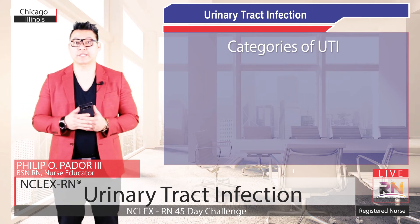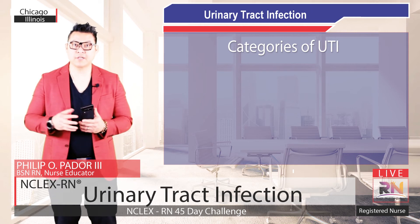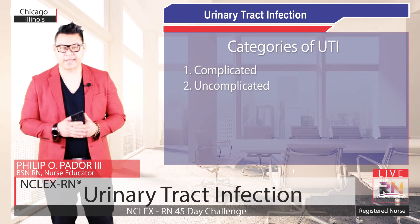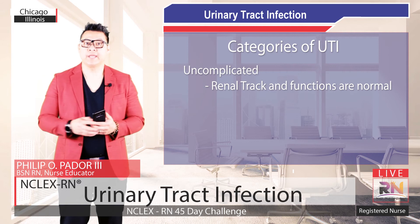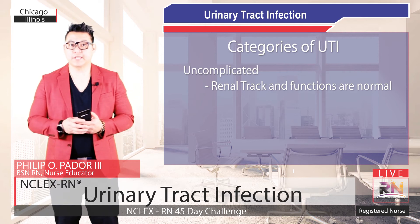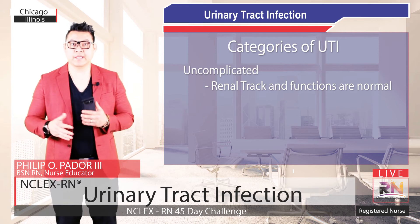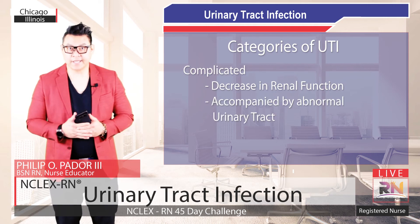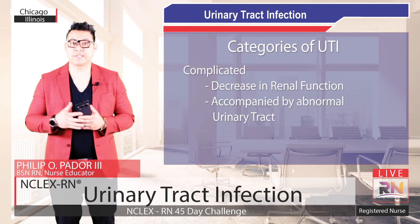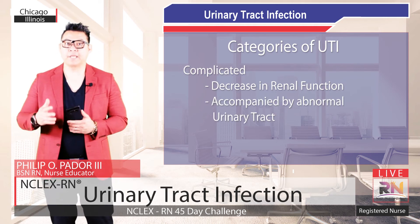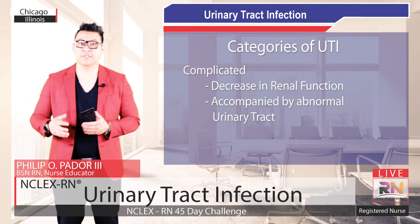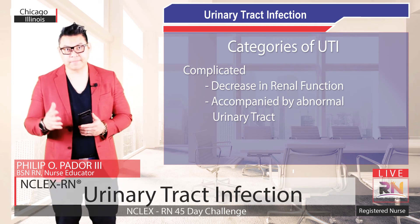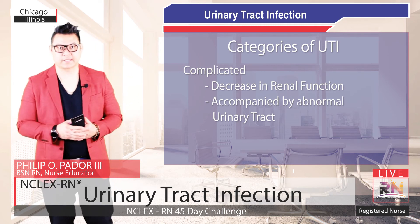Another way to categorize UTI is as either complicated or uncomplicated. With uncomplicated UTI, the renal tract and its functions are normal. With complicated UTI, there is decreased renal function based on investigations and symptoms, and it is potentially accompanied by an abnormal urinary tract.